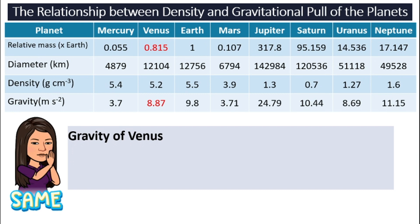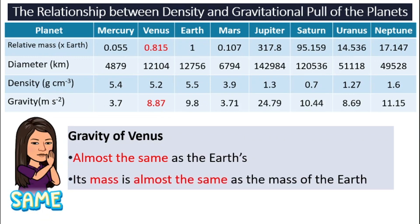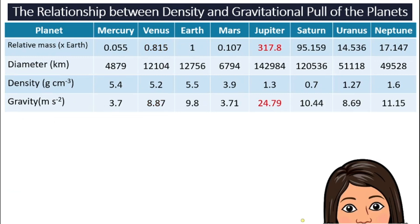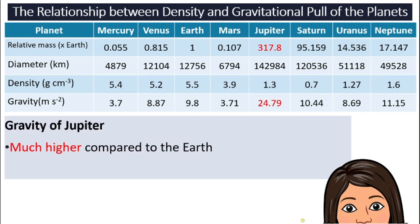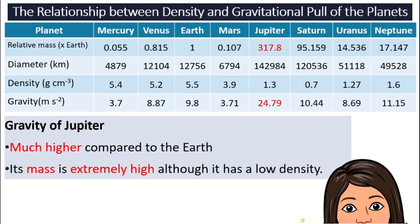Venus has a gravity of about 8.87, very close to Earth's 9.8. This is because Venus has a mass that is not very far from Earth's — around 0.8. Now, Jupiter has a very high gravitational pull compared to Earth: 24.79. As we discussed in our last video, Jupiter's strong gravity allows it to deflect objects that might otherwise come our way. Their very strong gravitational pull is related to their very high mass of 317.8.